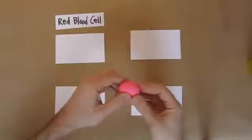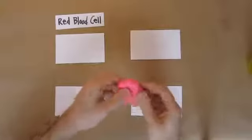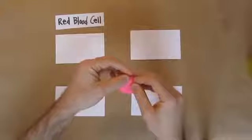First up are the red blood cells. Red blood cells are red and they look a little bit like a donut with a hole that doesn't go all the way through.